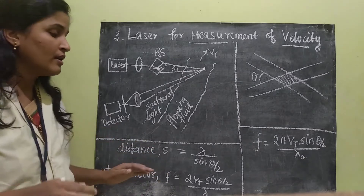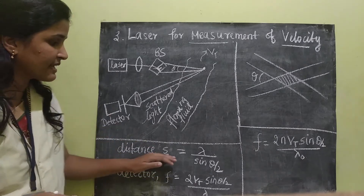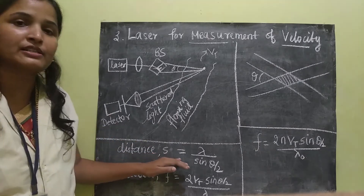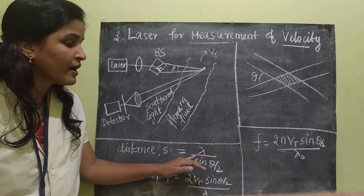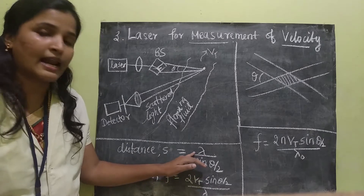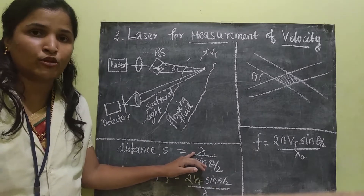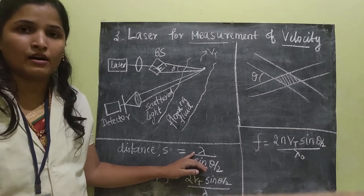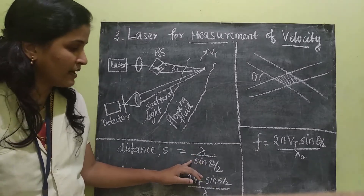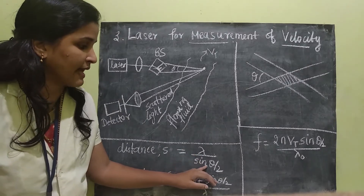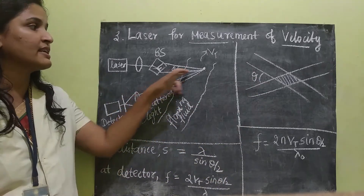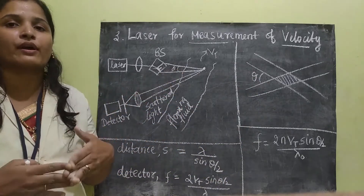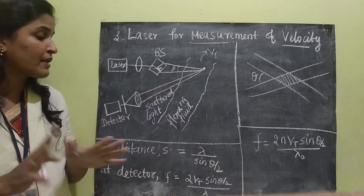The distance is given by the formula: lambda — where lambda is the wavelength of the laser beam — divided by sine of theta over 2. Theta is the angle between these two beam points.